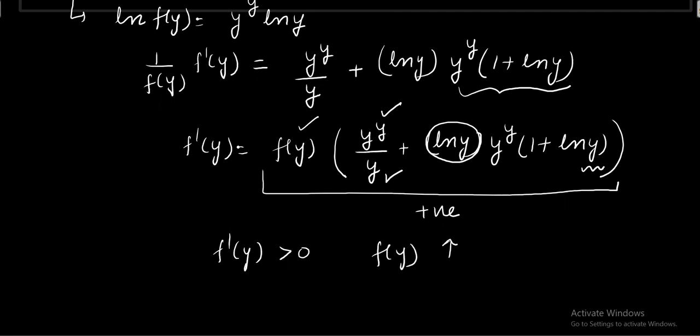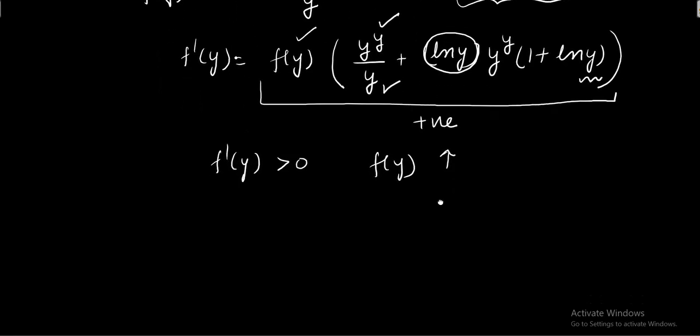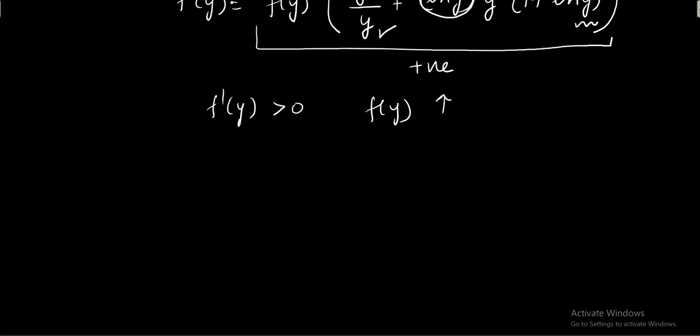Now since f of y is an increasing function, how is it going to help us in solving the question? So let us use this information in the equation y to the y to the y equals 2022. What we know is y raised to the power y raised to the power y is an increasing function. That's why for this equation we will have exactly one real root. How we can interpret this?